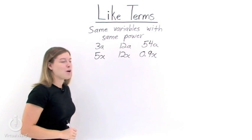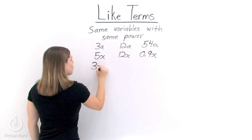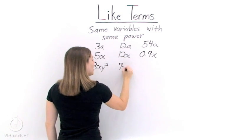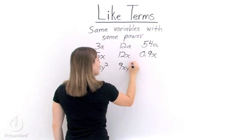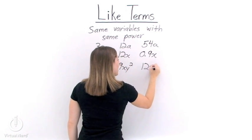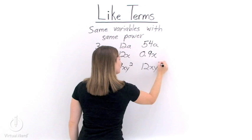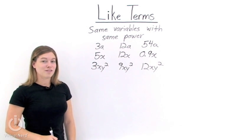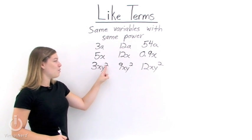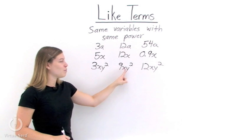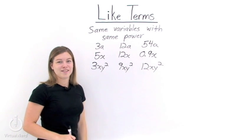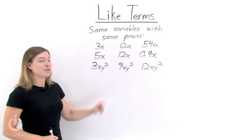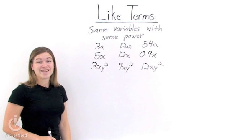Let's take one more set: 3xy squared, 9xy squared, and 12xy squared. All three of these are like terms. They all have xy squared — so they all have the same variables raised to the same power.